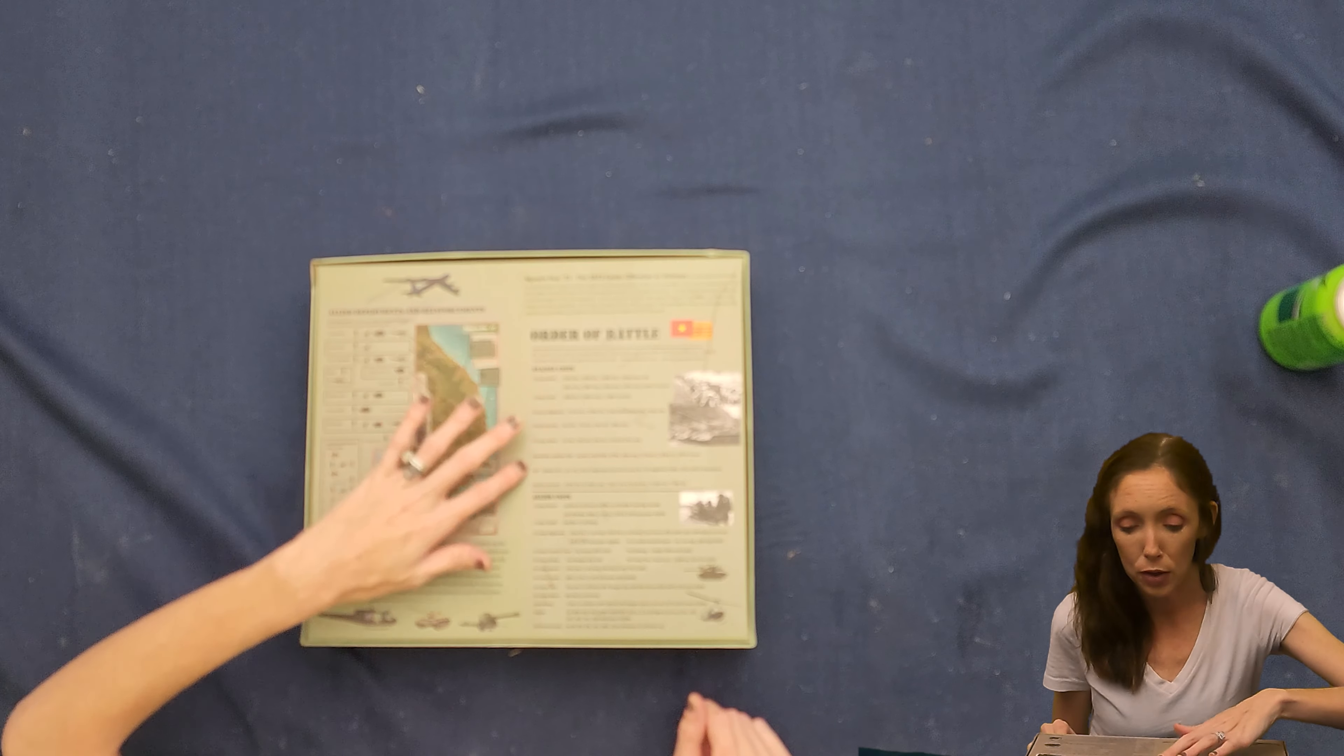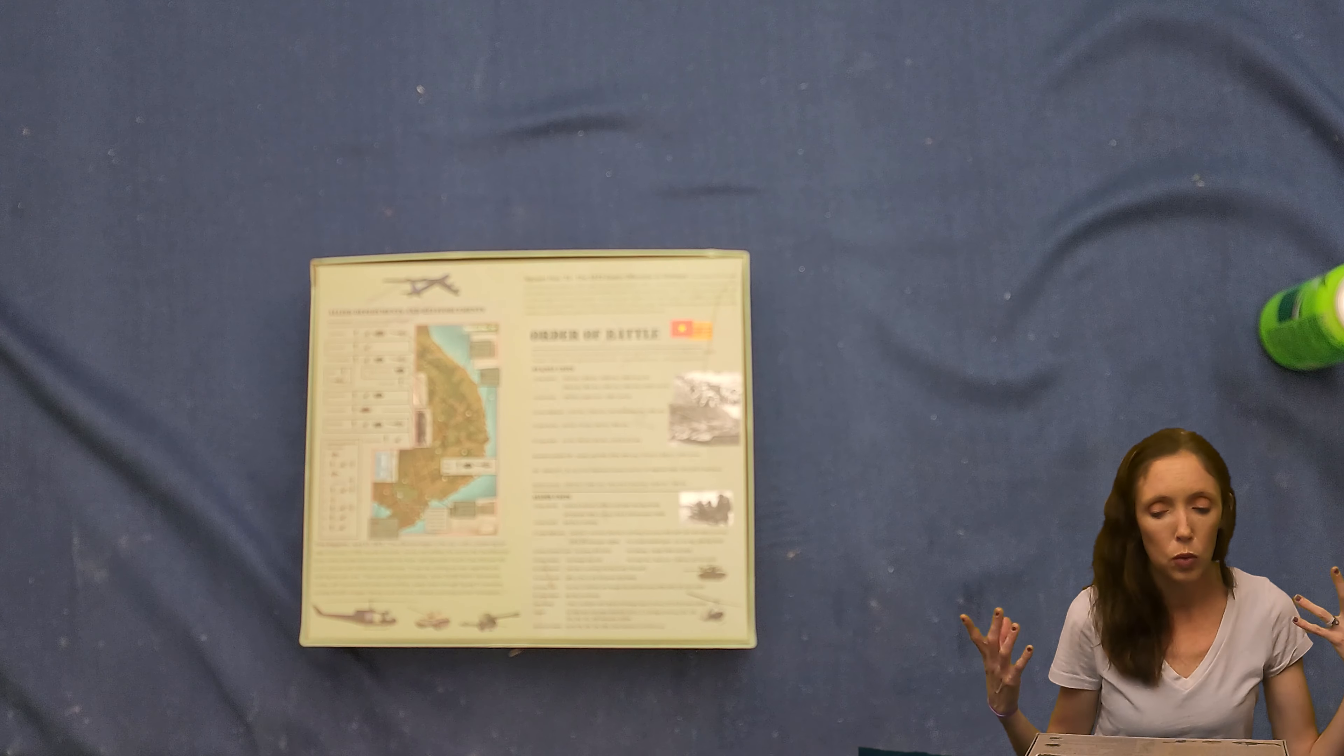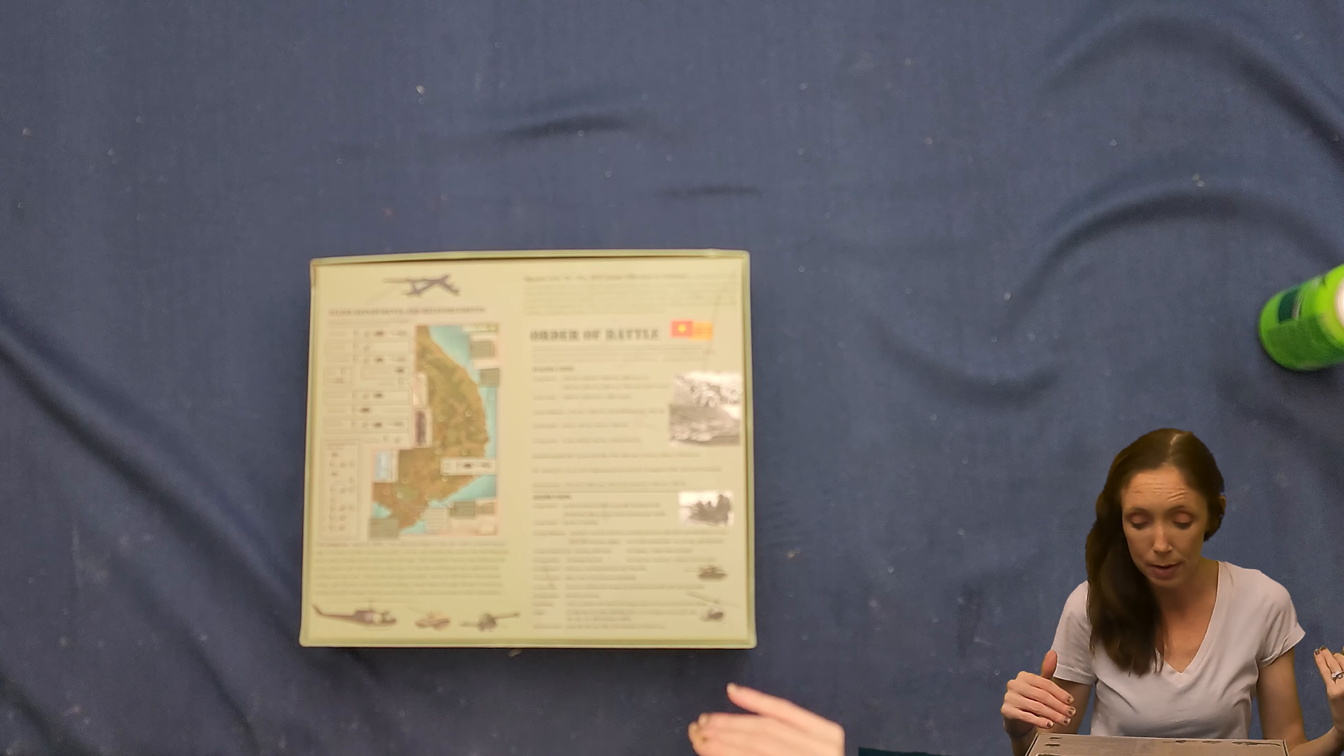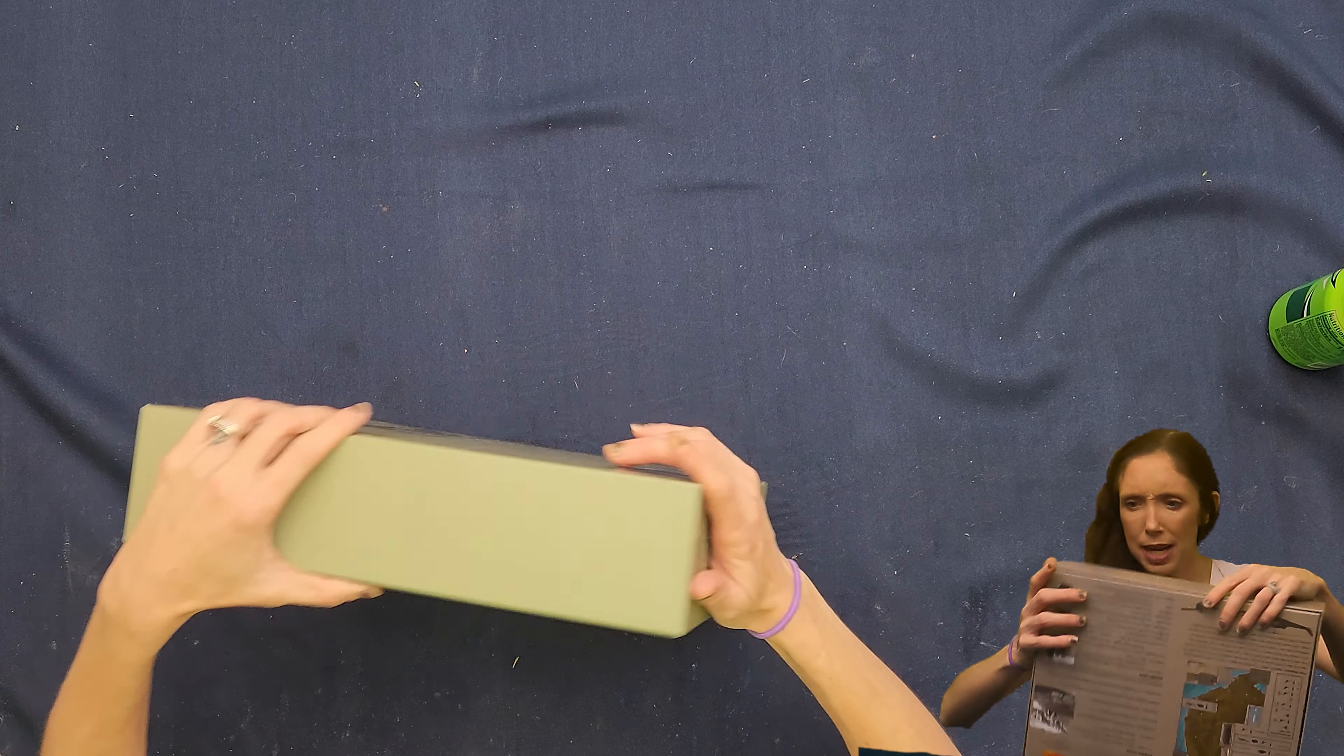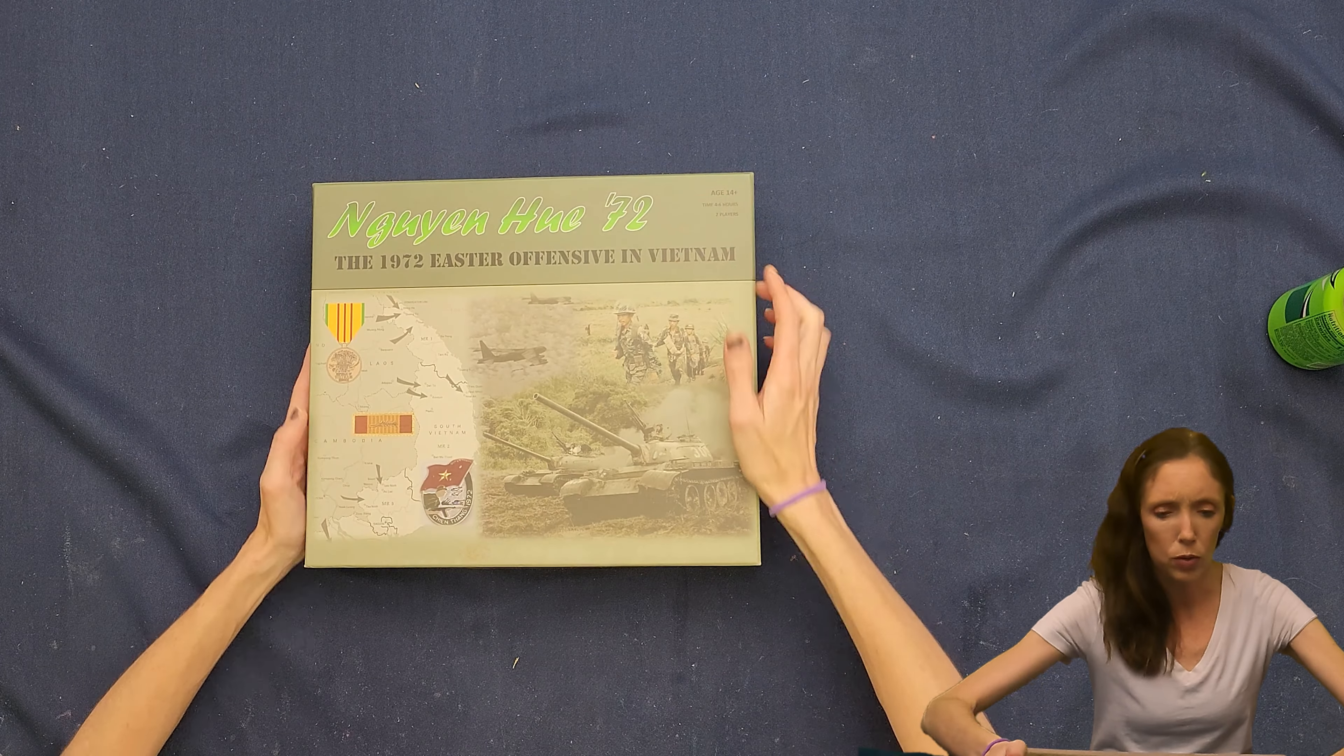And then we have order of battle over here. Allied units, NVA slash NLF units. Don't see components or like a time scale or complexity scale or any of that stuff on here. So we might find that in the box. It doesn't even tell me on this who this is by. It says ages 14 and up, time four to six hours. And it's for two players.